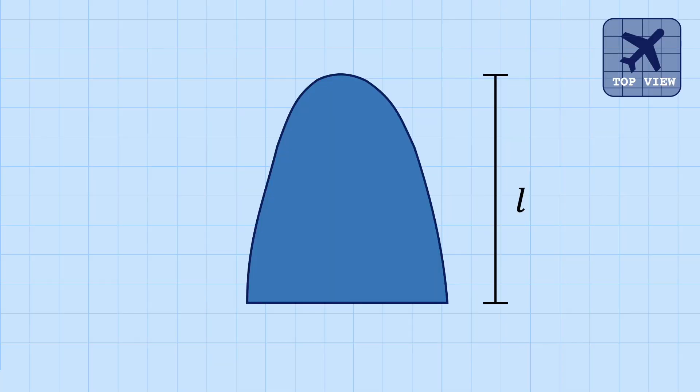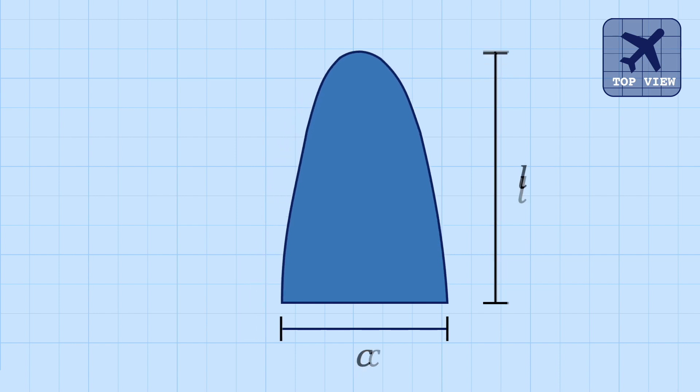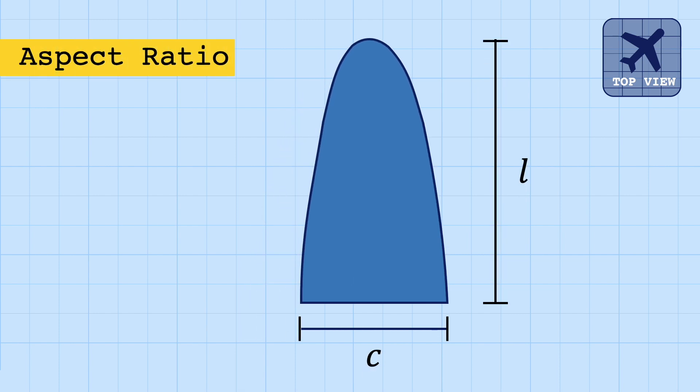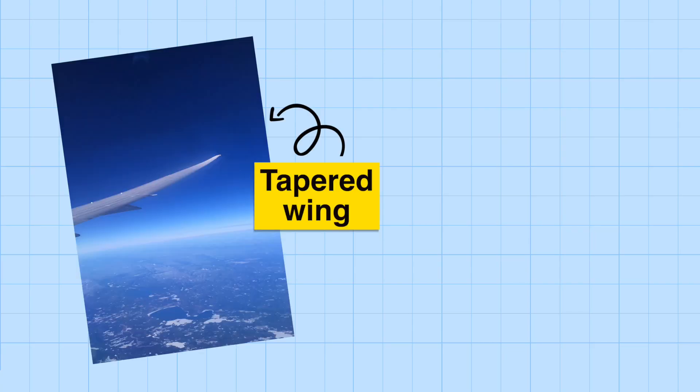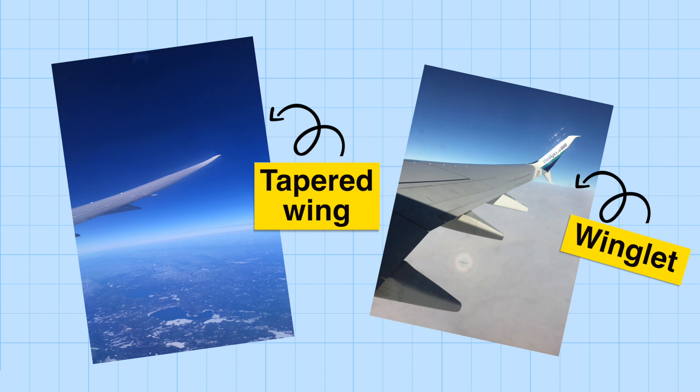There are many ways to minimize induced drag — for example, increasing the ratio between the length and width of the wing, also called its aspect ratio, or by using tapered wingtips or winglets.